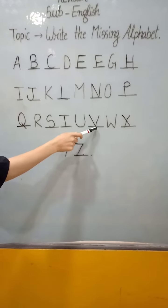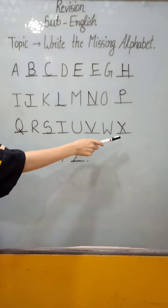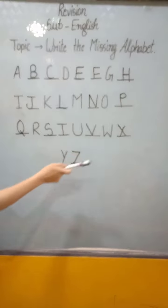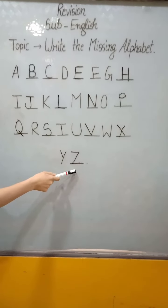U for Umbrella. V for Van. W for Watch. X for Xylophone. Y for Yak. Z for Zebra.